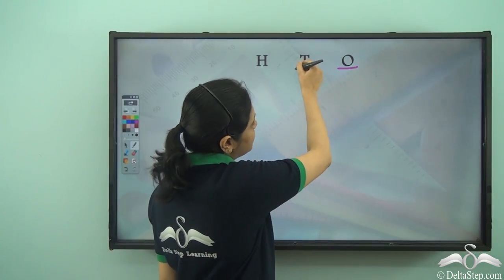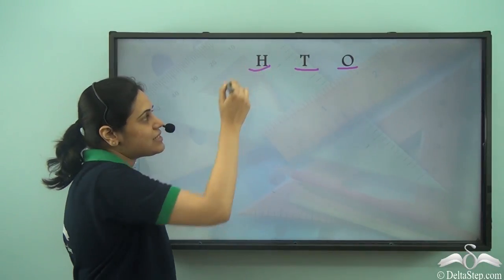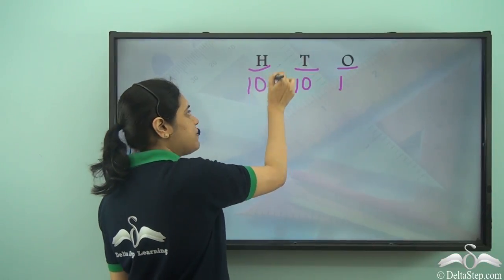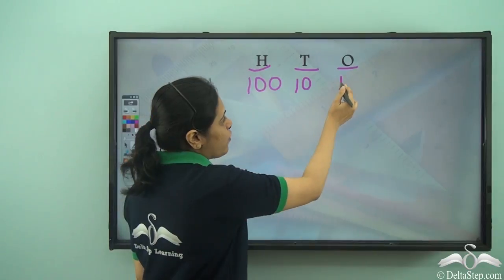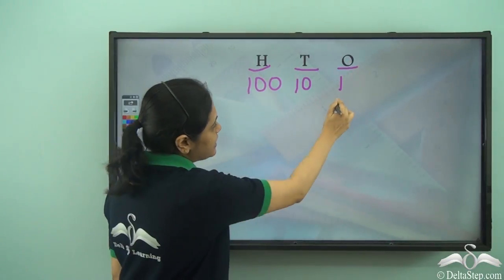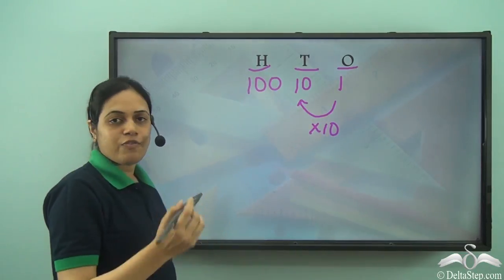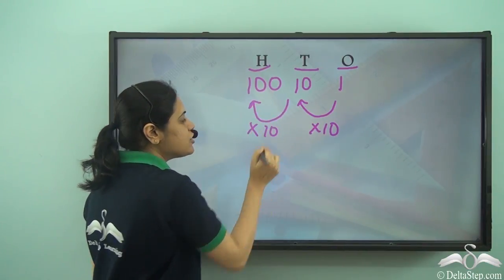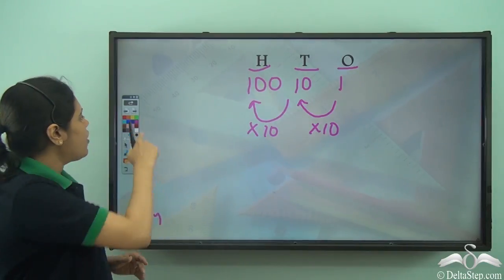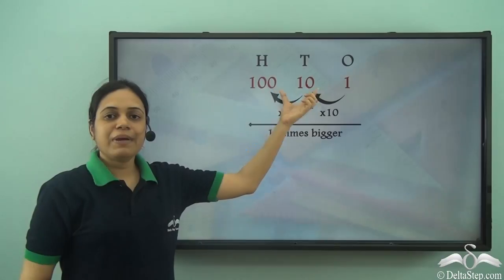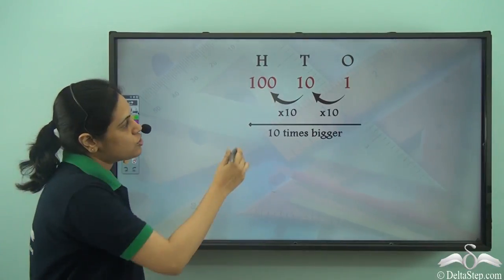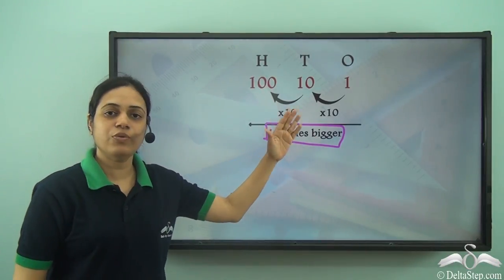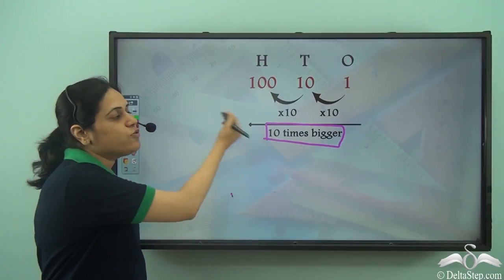This is the ones place, this is the tens place, and this is the hundreds place. When I want to go from the ones place to the tens place, I need to multiply by ten. And if I want to go from the tens place to the hundreds place, I need to multiply by ten again. So as I move to the left, it becomes ten times bigger — the place value becomes ten times bigger as I move to the left.